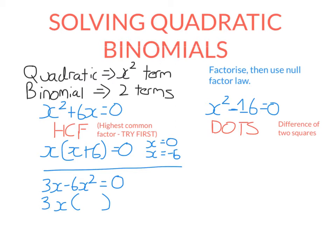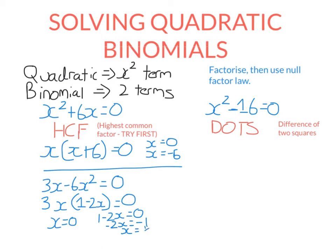What do I times by 3x to get 3x? Well, that's just 1. What do I times by 3x to get minus 6x squared? To get from 3 to minus 6, I need to times by minus 2, and to get from x to x squared I need an x. So I've factorised the expression and now I can use the null factor law. Either 3x equals zero, which means x equals zero. Or 1 minus 2x equals zero — subtract 1 from both sides, then divide by minus 2, giving x equals positive one half. So the two solutions are x equals 0 or x equals positive one half.